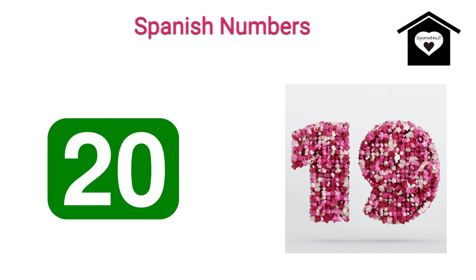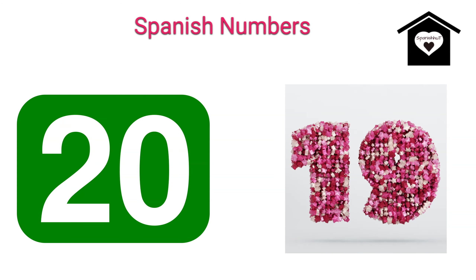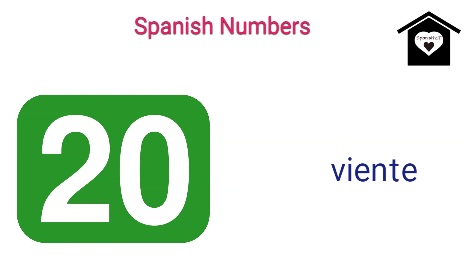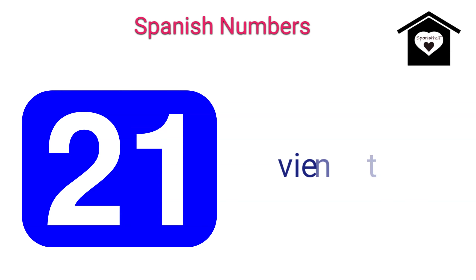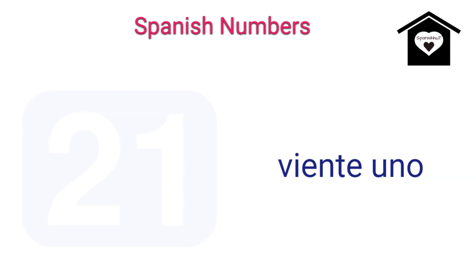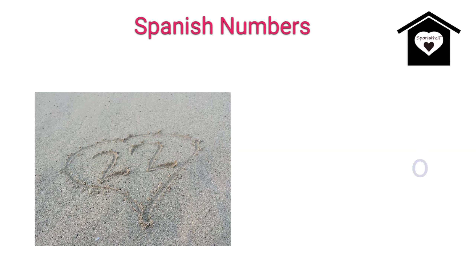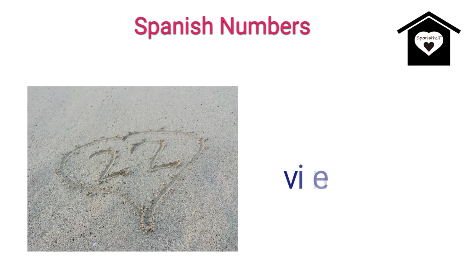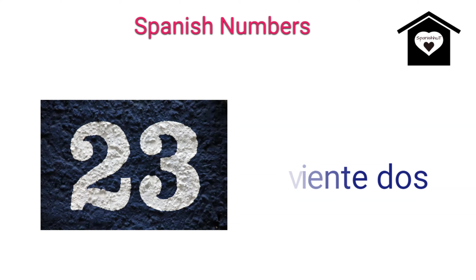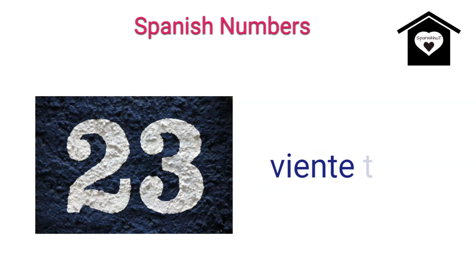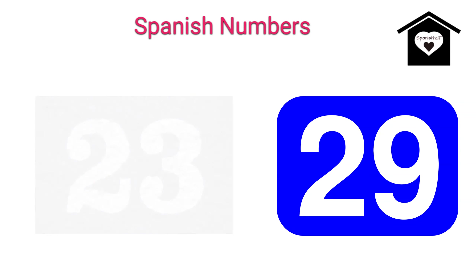So let's start 20. 20 we call it as Veinte. 21 we call it as Veinte Uno. 22 we call it as Veinte Dos. 23 we call it as Veinte Tres. And so on up to 29.